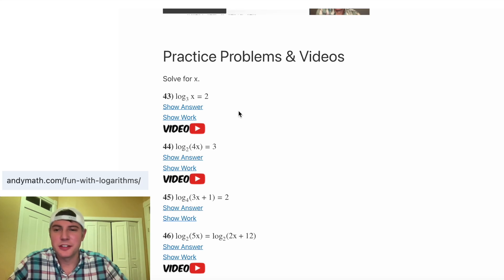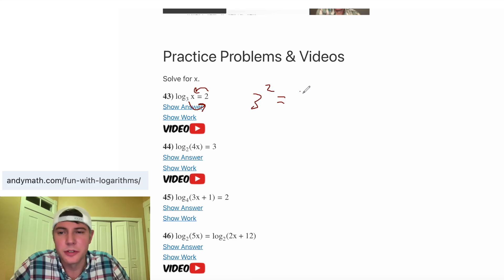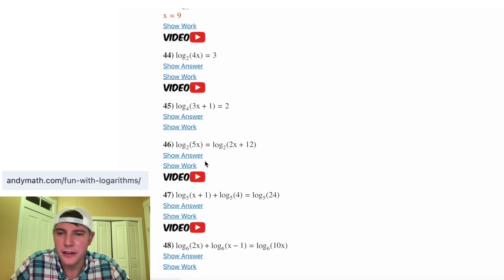This one says log base 3 of x equals 2. When it's written like this, the way you solve it is you do that loop from before. And it's 3 squared equals x. So the answer is x equals 9. So if we hit show answer, x equals 9. 44 is the same way. 45 is the same way.